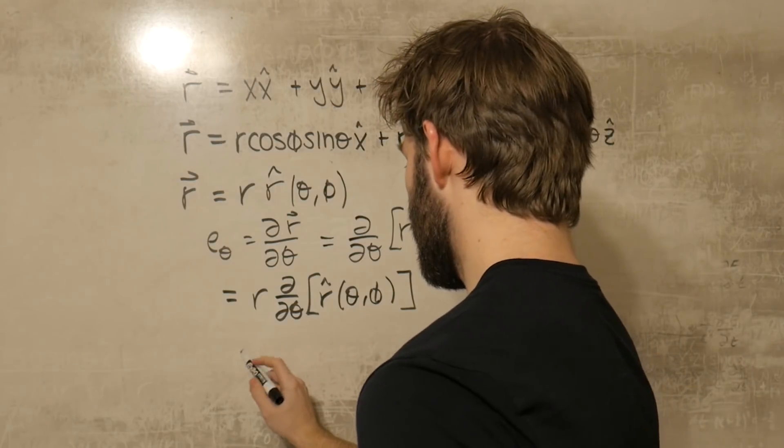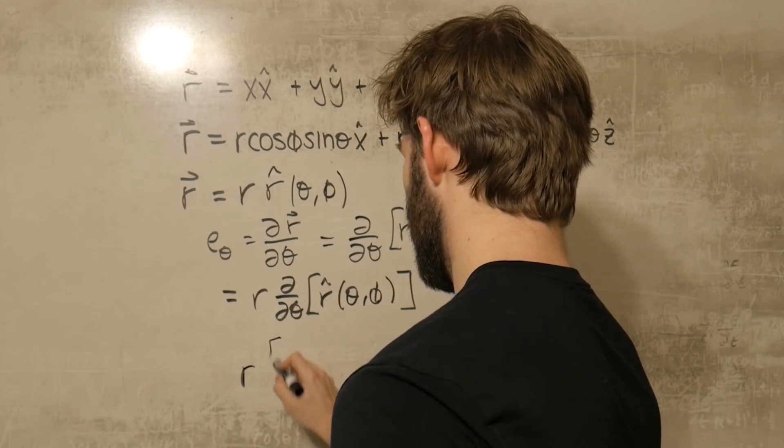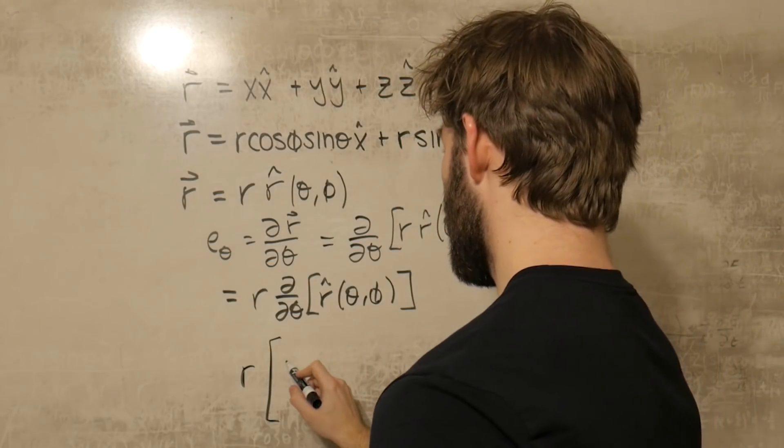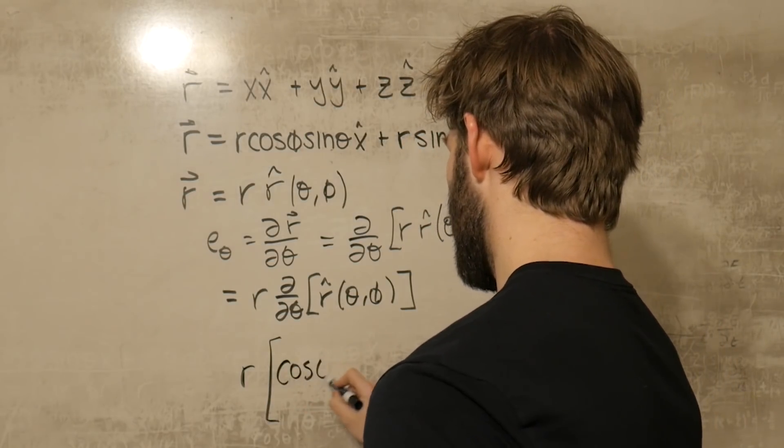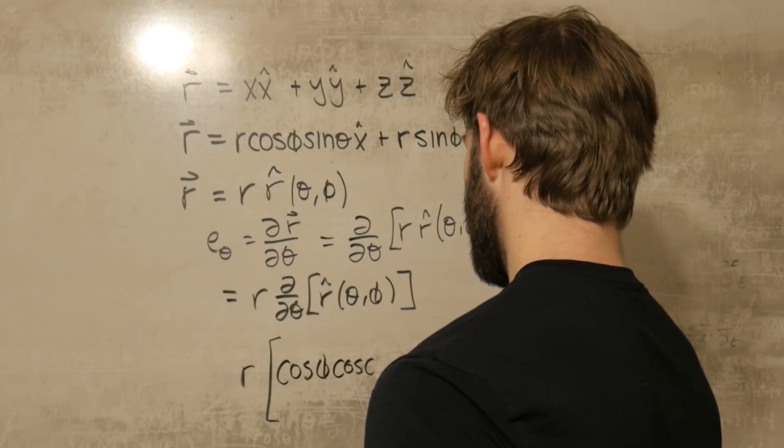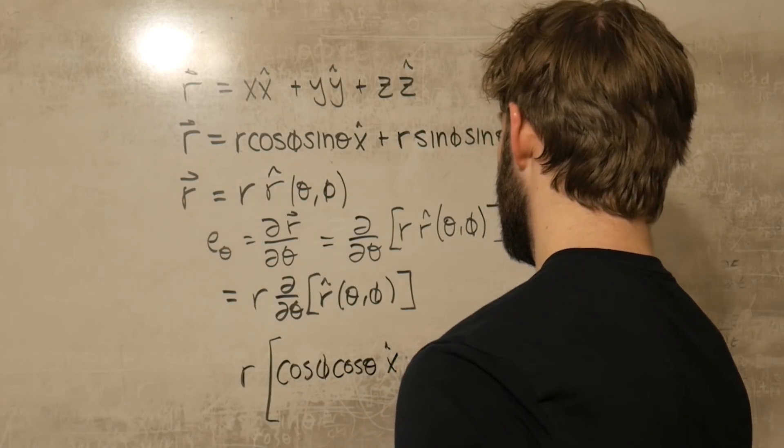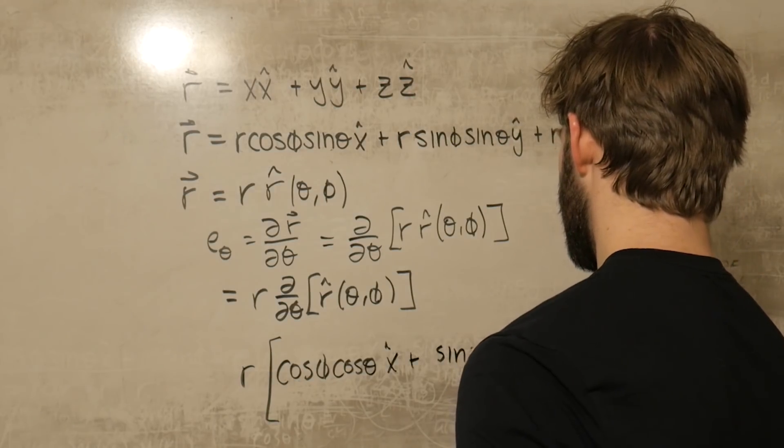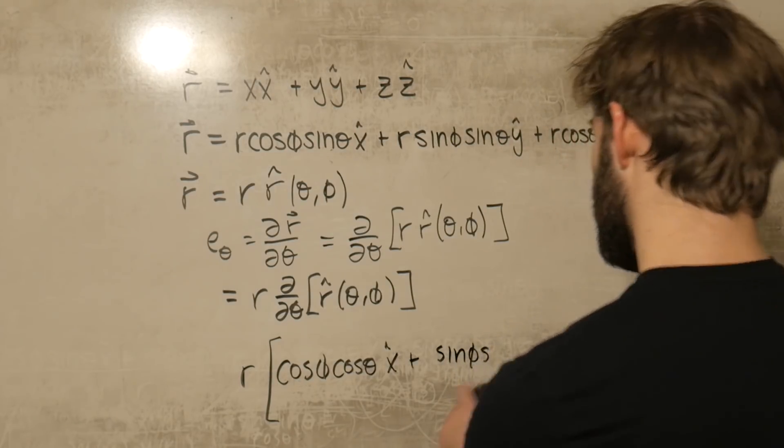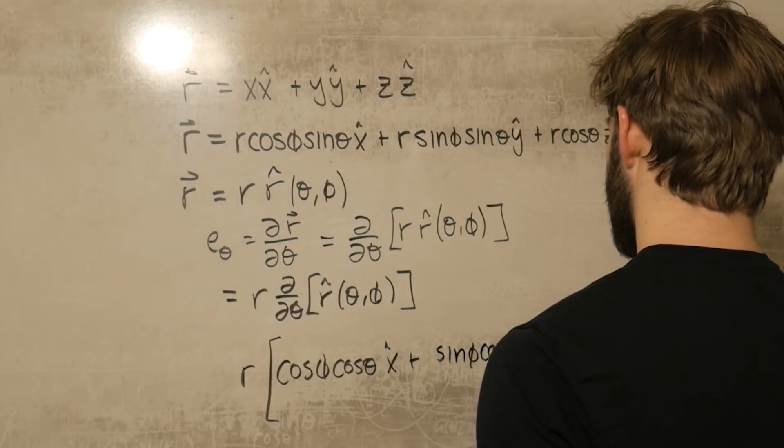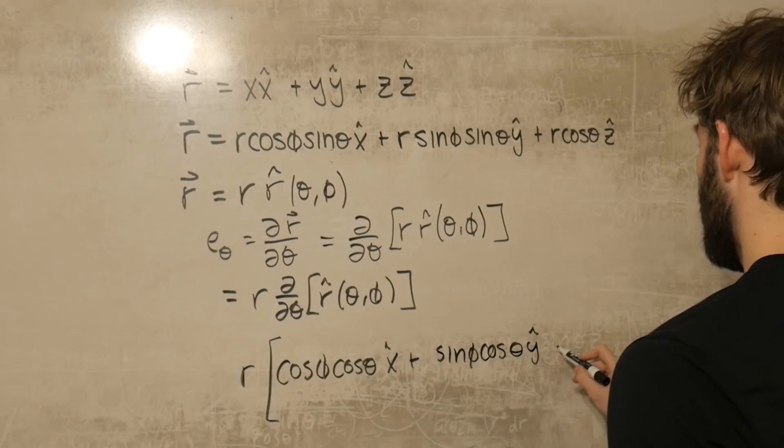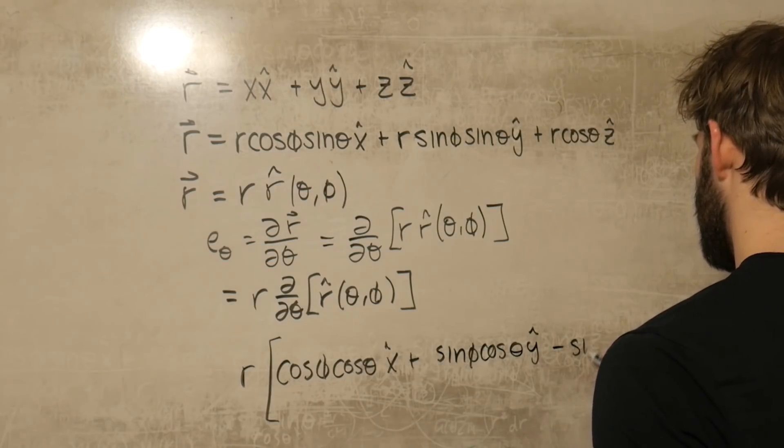The next step is to just take the derivative of this function here, sans the r. Remember, we already factored that r out in order to define it as this. So if we do that, we get that this is equal to r, well the derivative of sine is just cosine, so this just becomes cosine phi cosine theta x hat plus sine phi cosine theta y hat minus sine theta z hat.